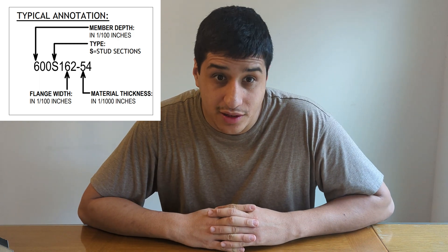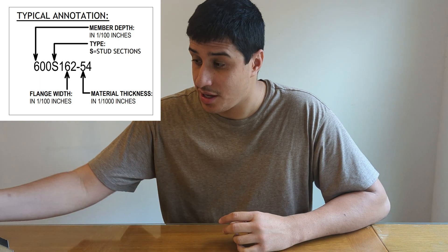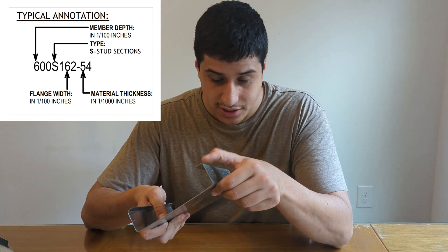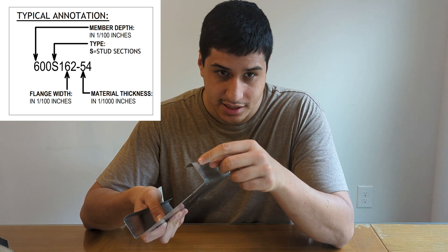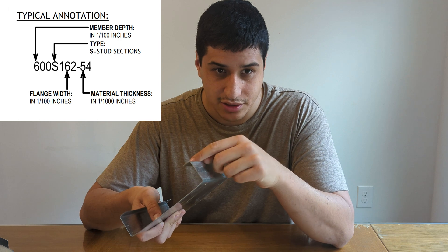The other typical shape is a T for track, expressed by a T. The third part of the name is the flange, also expressed in hundreds of inches. This is the flange right over here on a stud.